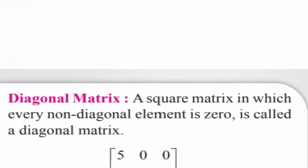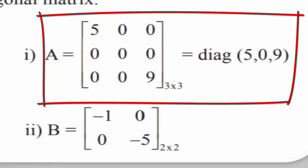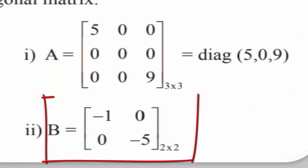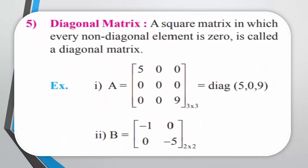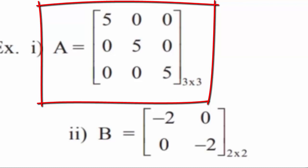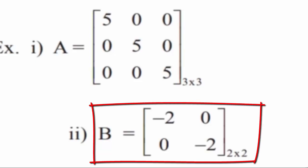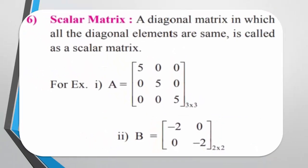Diagonal matrix: A square matrix in which every non-diagonal element is 0 is called a diagonal matrix. At least one of the diagonal elements should be non-zero. For example, in matrix A the diagonal elements are 5, 0, 9 and all non-diagonal elements are 0. In matrix B the diagonal elements are −1, −5 and all non-diagonal elements are 0. Scalar matrix: A diagonal matrix in which all the diagonal elements are the same is called a scalar matrix. In matrix A all diagonal elements are 5, and in matrix B all diagonal elements are −2, with non-diagonal elements 0. All scalar matrices are diagonal matrices, but not all diagonal matrices need be scalar matrices.